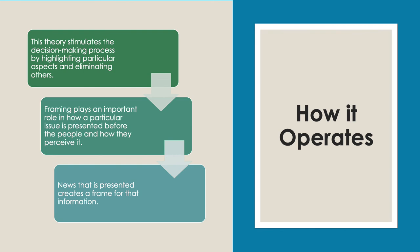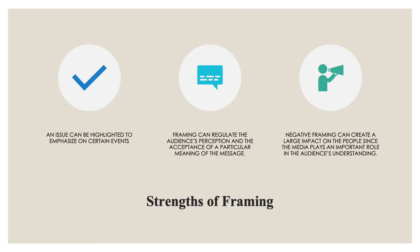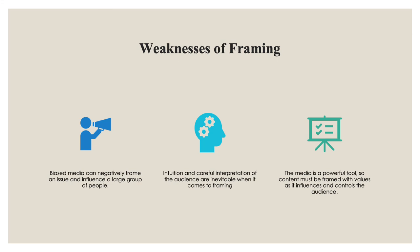How framing operates: this theory stimulates the decision-making process by highlighting particular aspects and eliminating others. Framing plays an important role in how a particular issue is presented and how people perceive it. The strengths of framing include that an issue can be highlighted to emphasize certain events, framing can regulate audience perception and acceptance of a message, and negative framing can create a large impact since the media plays an important role in the audience's understanding. The weaknesses are that biased media can negatively frame an issue and influence large groups, intuition and careful interpretation are inevitable, and content must be framed with values as it influences and controls the audience.